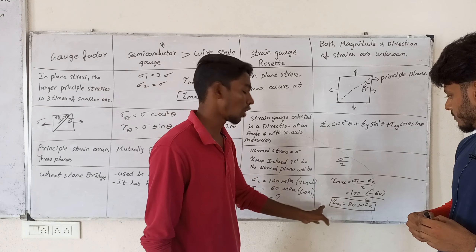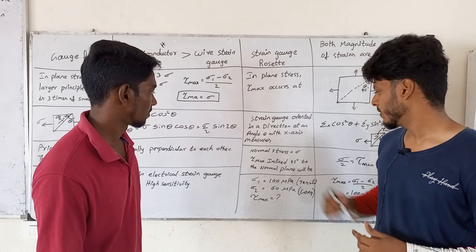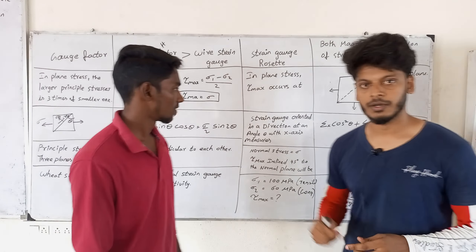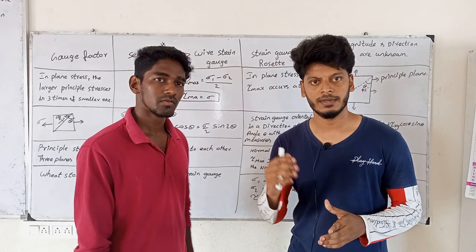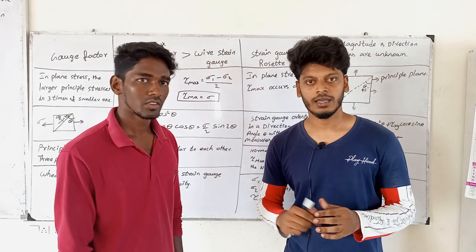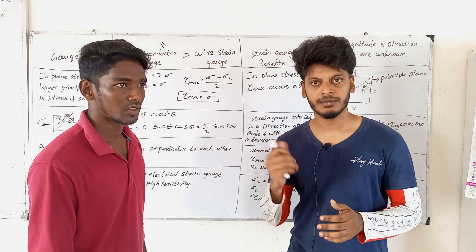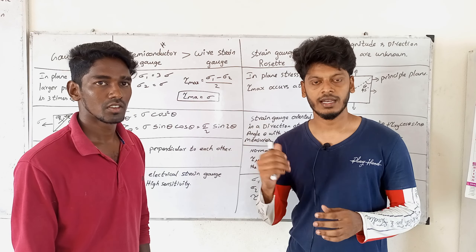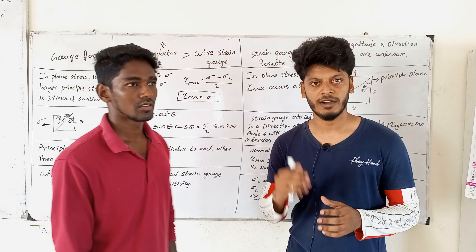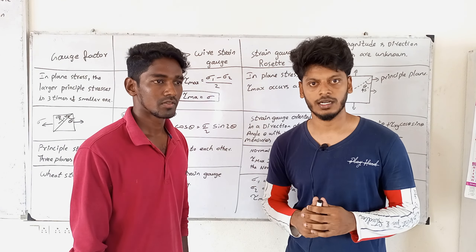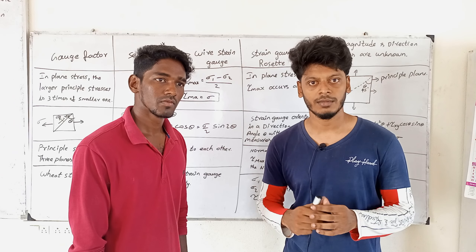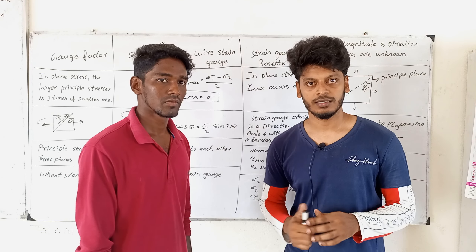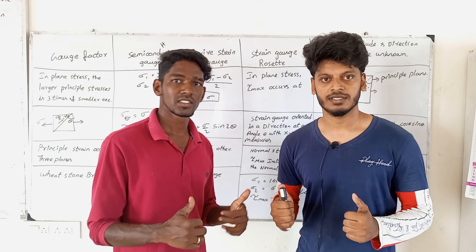Thank you. Now, let's add a point here. If you look at the principal plane, the principal stress is 80 MPa. The maximum shear stress acts at 45 degrees to the principal plane. Sigma-1 is 100 MPa and sigma-2 is 100 MPa. Thank you, champions.